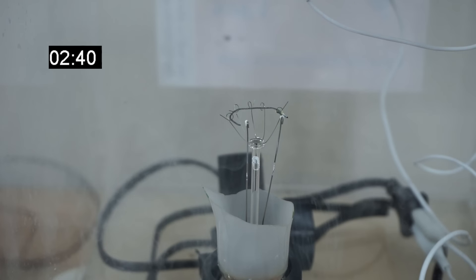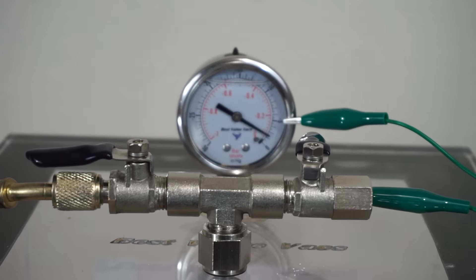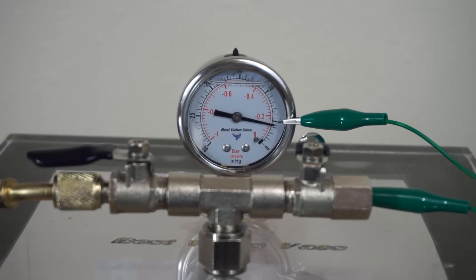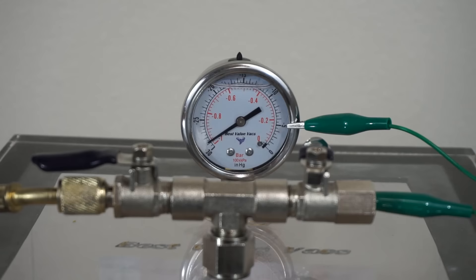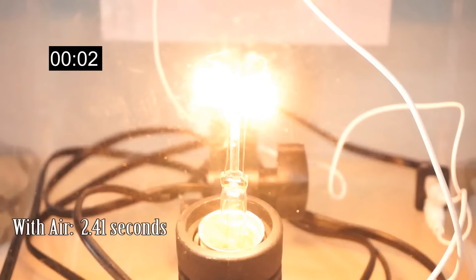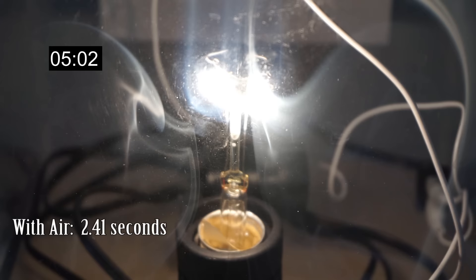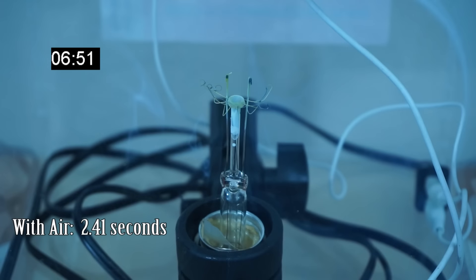First, let's pump down our chamber. Okay, I'm going to turn off the vacuum. Let's flip on the power and see what happens. Broken light bulb in a vacuum chamber, three, two, one... Whoa, it's working! Oh, and that was it.